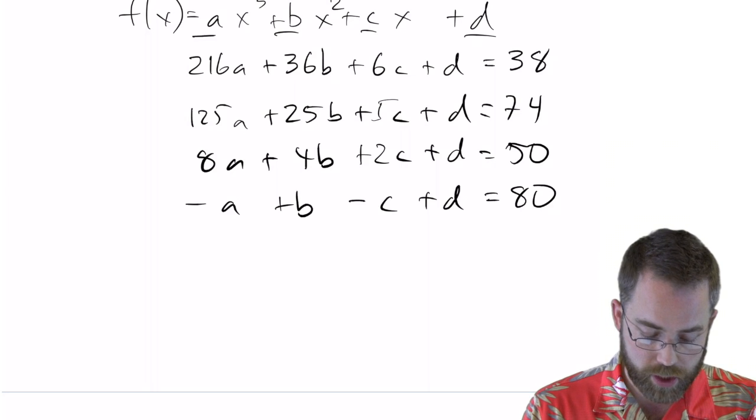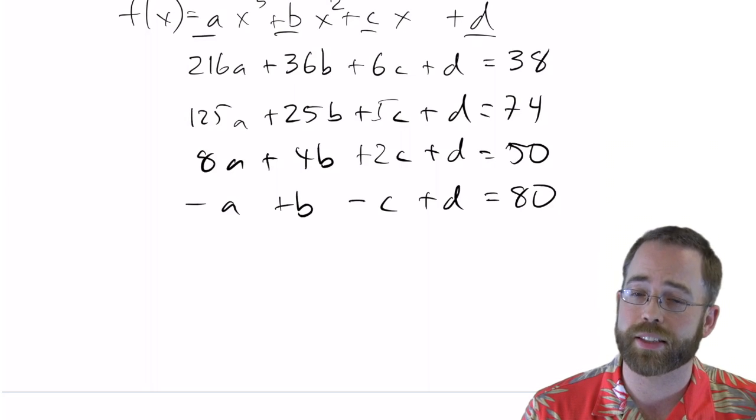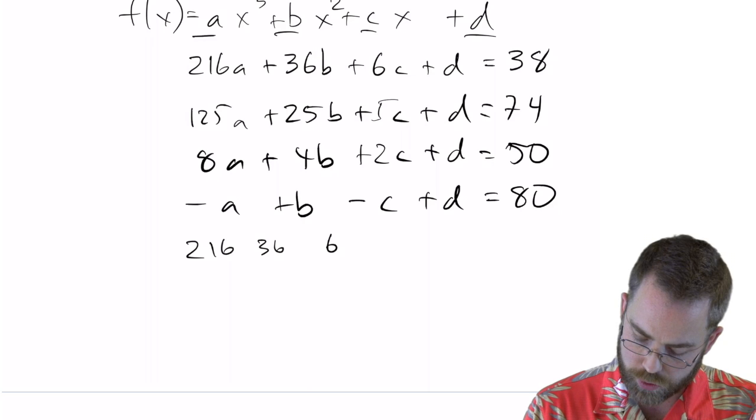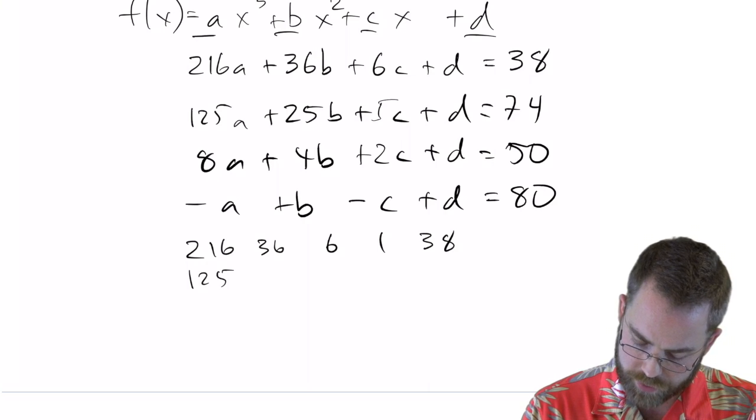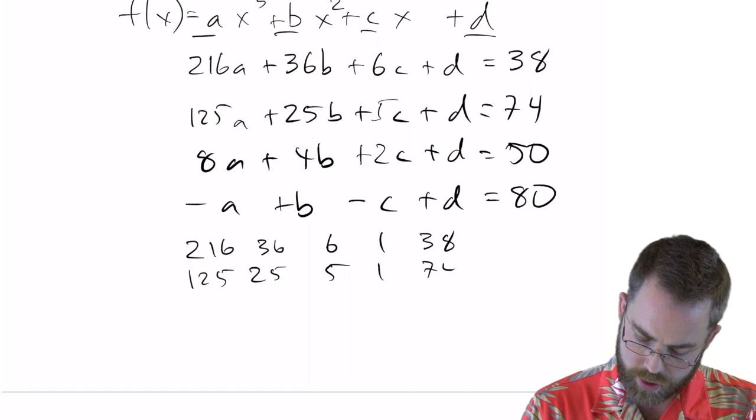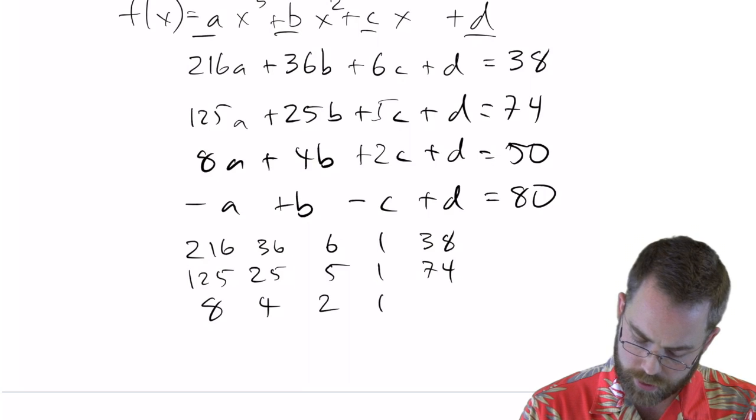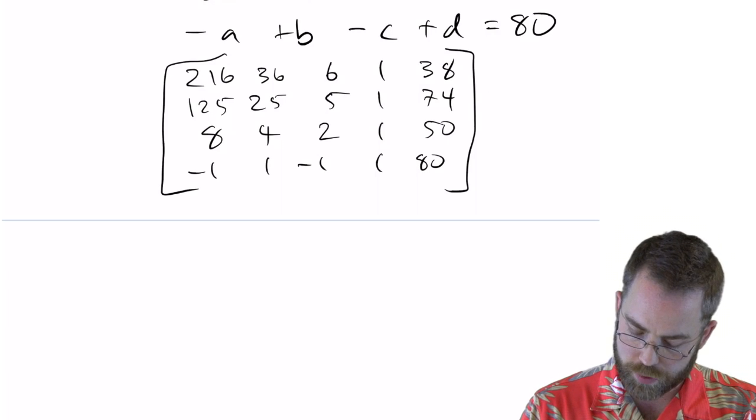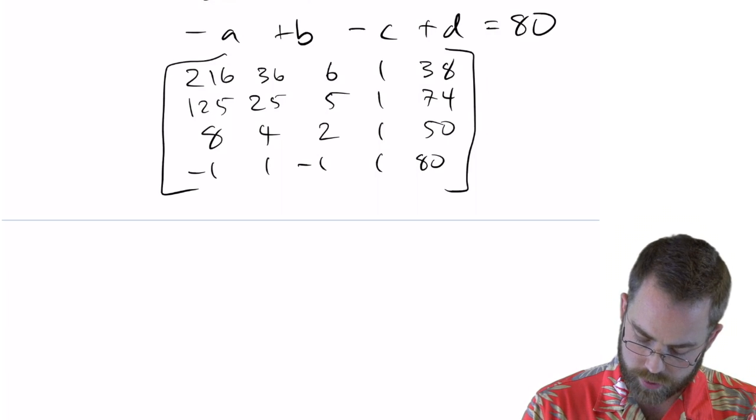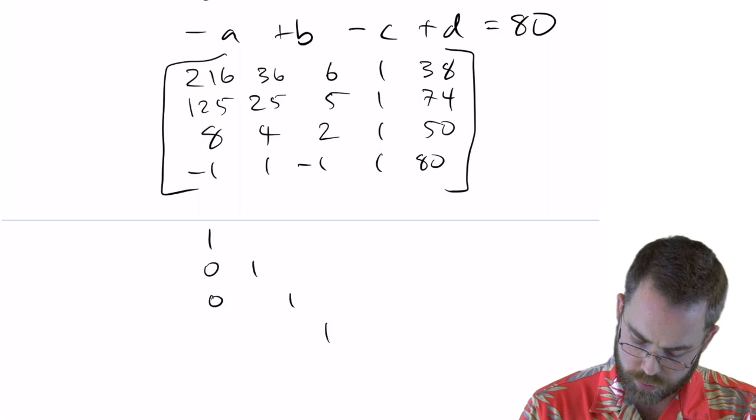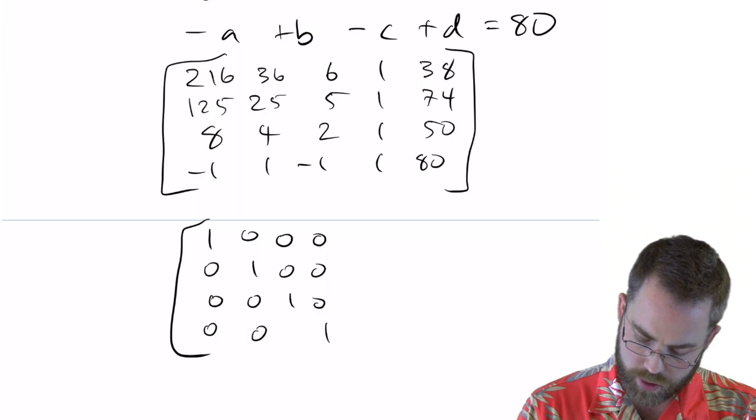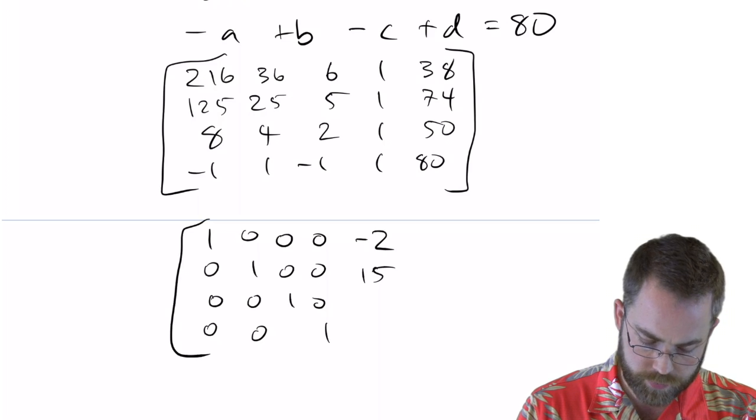Well, if we just rip the coefficients off and solve as a system in a matrix, we can say, well, 216, 36, 6, 1, 38, 125, 25, 5, 1, 74, 8, 4, 2, 1, 50, negative 1, 1, negative 1, 1, 80. That if I RREF that matrix, then I will get 1s on the diagonal, 0s all around, and, oops, too soon. And then over here, I will get negative 2, 15, negative 19, 44.